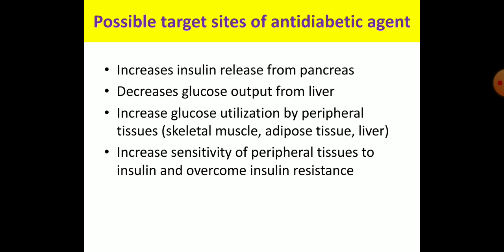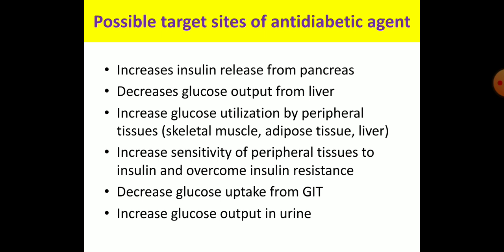Glucose utilization by peripheral tissues can also be increased by increasing the sensitivity of those tissues to insulin, thereby overcoming insulin resistance — so these two points can be grouped together. Additionally, decreasing carbohydrate absorption from the GI tract, and lastly increasing carbohydrate loss in the urine, are also possible target sites for anti-diabetic agents.